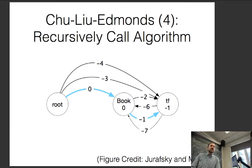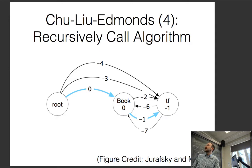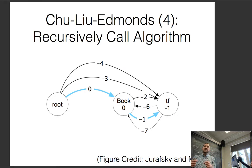If there's an exact tie in the score, you break ties arbitrarily — you could pick the leftmost one whenever it ties. But if it's a neural model, you'll almost never get ties because you randomly initialize the parameters, which are randomly initialized to give basically slightly different values every time. So it's not actually a problem.